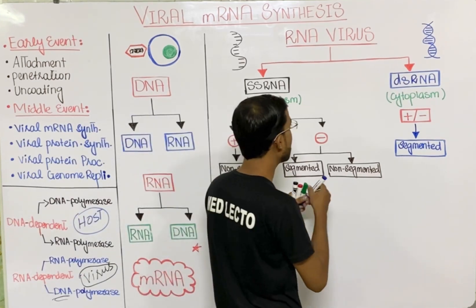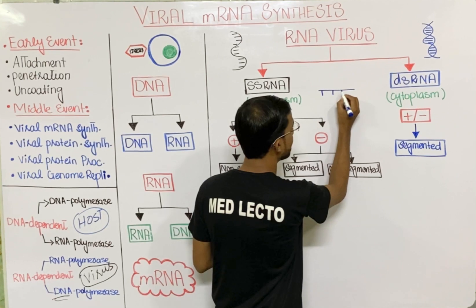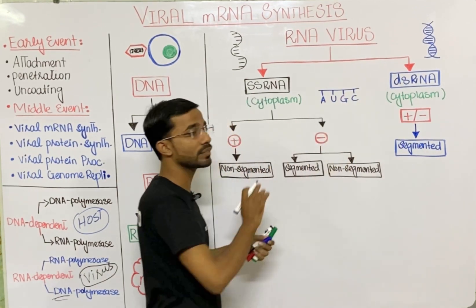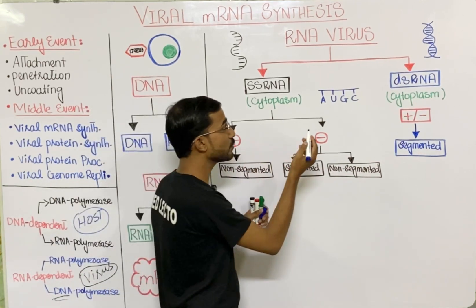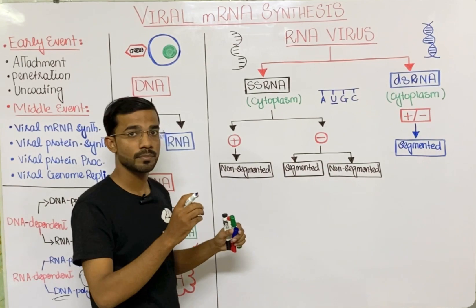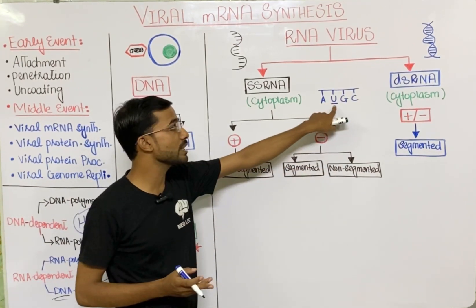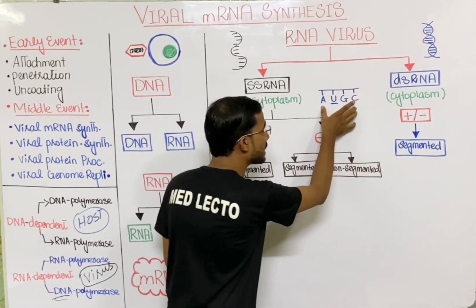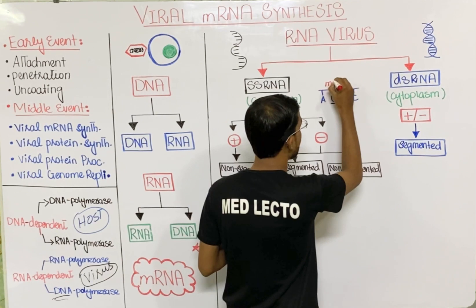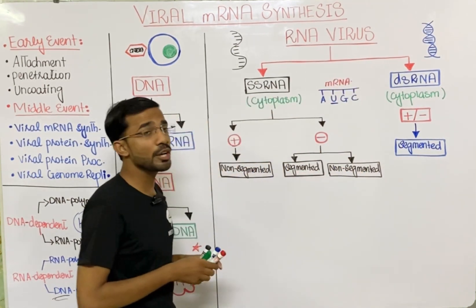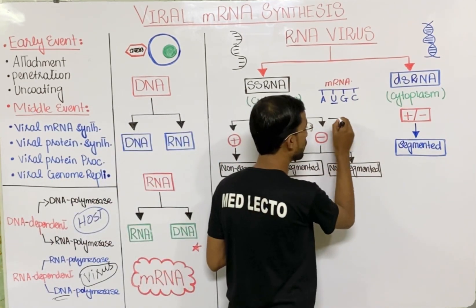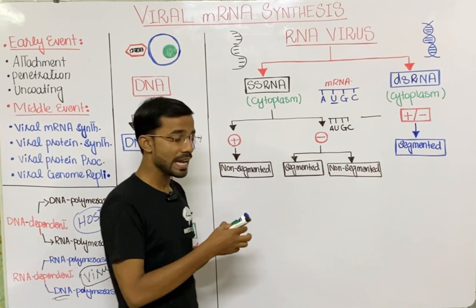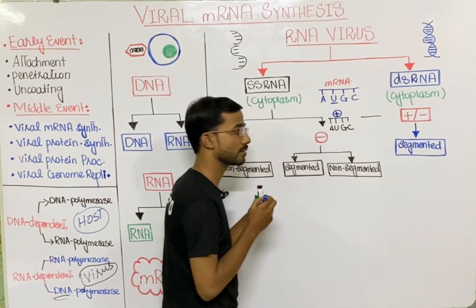For example, if we have a sequence AUGC — that is the sequence of the RNA. As we know, RNA contains uridine instead of the thymine found in DNA. So if this is the messenger RNA and another RNA has the same sequence, then we say it is positive polarity RNA — that is the most important thing.